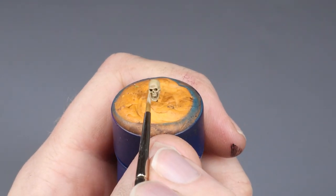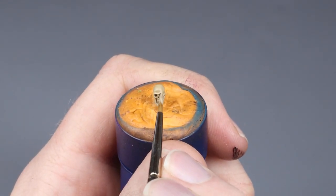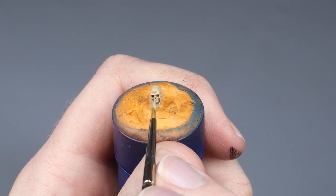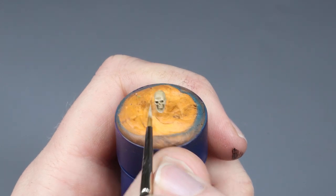We apply this only at crucial locations where the layers would show through easier, such as the brow line and the cranium. This helps to render a smoother transition.